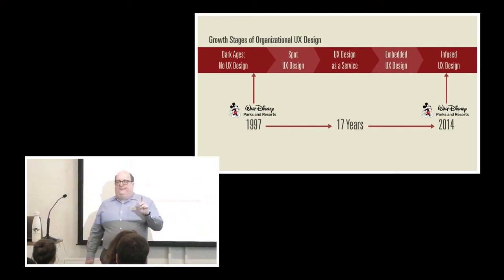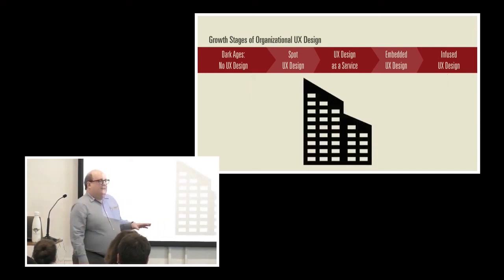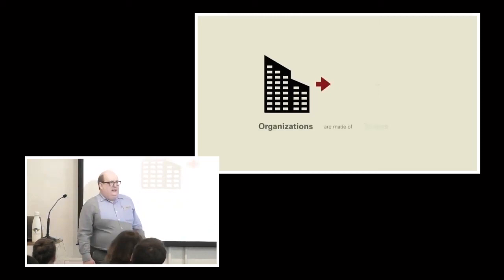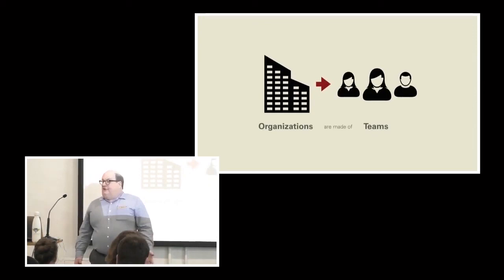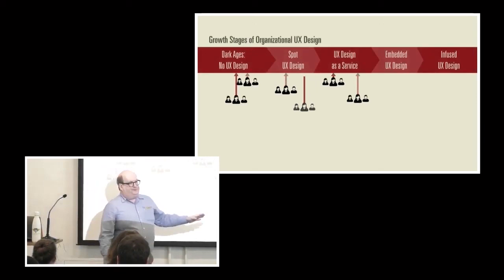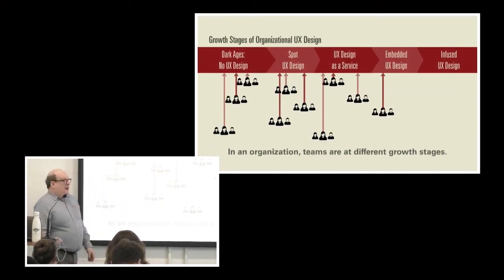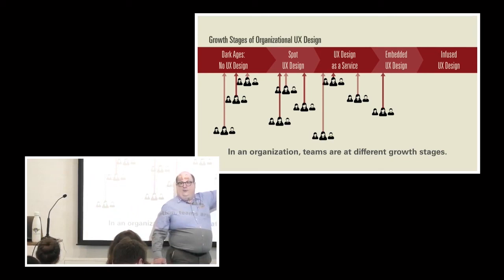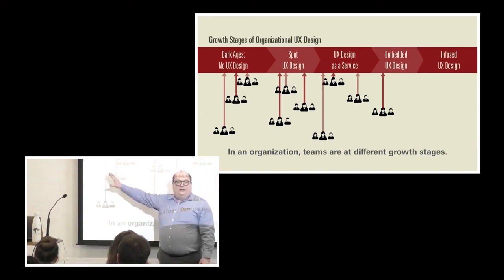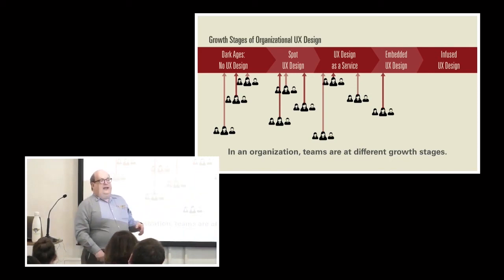It turns out that Disney, when we saw them in 1997, they were definitely in the dark ages. They just needed to ship a website. Users didn't matter. But in 2014, they were definitely at infused UX design. Everybody in the organization, everybody in parks and resorts was making decisions based on what would be best for the user. That process took them 17 years. If you're imagining where your organization might be in this progression, and you are less than 17 years into it, you are ahead of Disney. Congratulations.